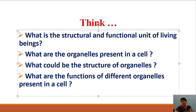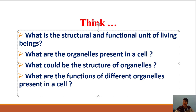What could be the structure of organelles? How are they made up? What are the functions of different organelles present in a cell? We have seen the nucleus and its functions in the previous class. The nucleus is the important organelle of the cell — it contains genetic material, controls all other functions of the cell, and is the reason for our characteristics like skin color, eye color, hair color, and other traits.